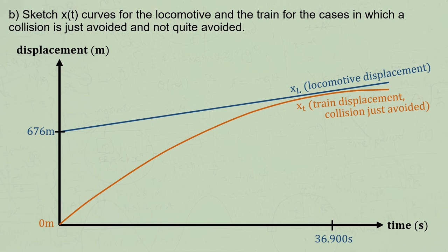But what if a collision were not quite avoided? The motion of the locomotive would be the same, since the driver never reacts to the situation. But the magnitude of the deceleration of the train would be lower, so it would travel further in the same amount of time, causing it to collide with the locomotive. So its line would briefly meet the line of the locomotive, representing a collision.